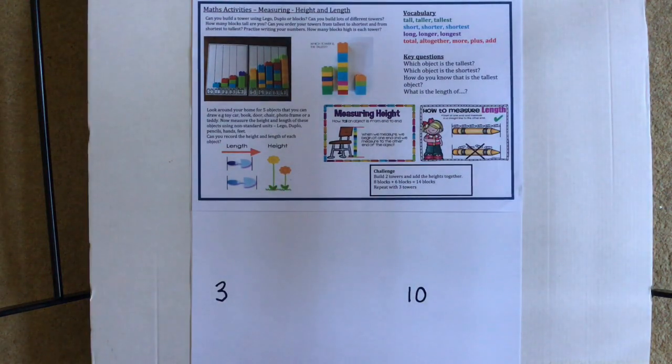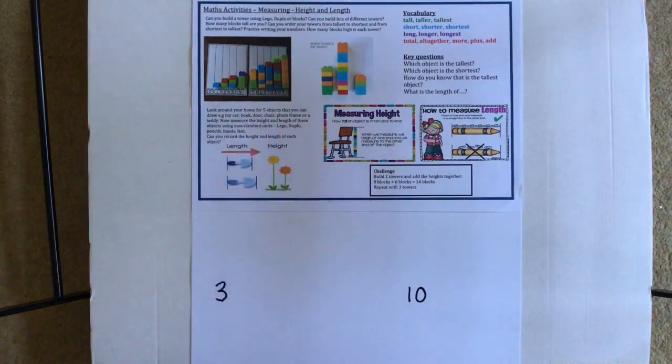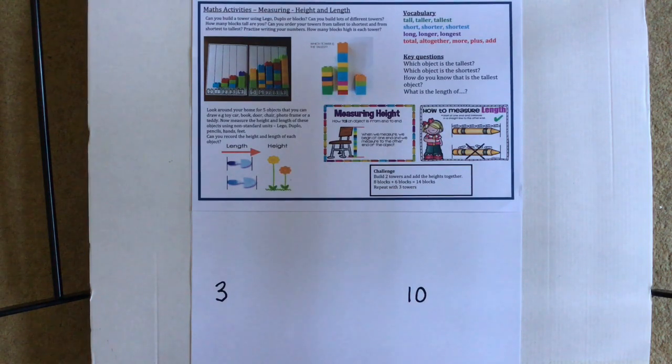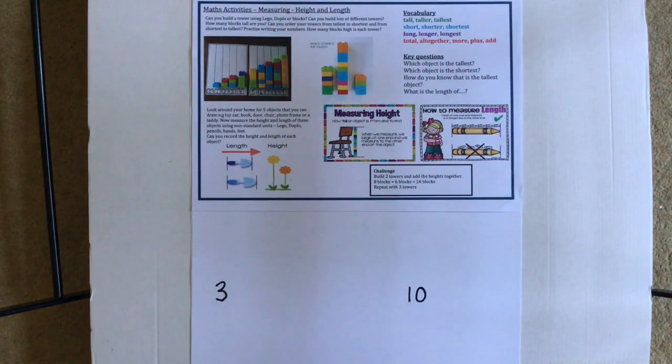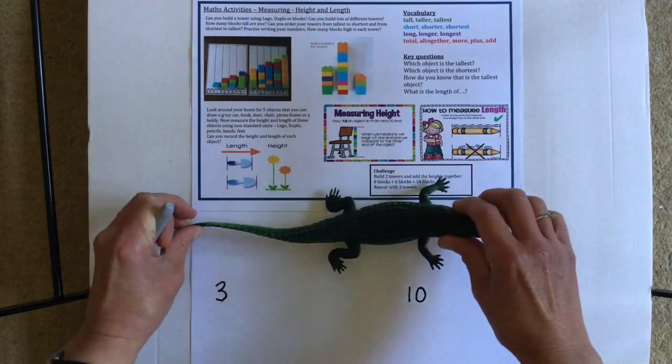When you've done that, maybe you can do the next activity, which is all about finding five different things in your house. It can be anything, a toy car, a cup, a chair. They can be big things, small things. You choose five different things and you can measure the height or you can measure the length of those things using anything you want, like blocks, or you could even try using some paper clips. I've got some pegs here. You could try using those, all sorts of things you could use to measure the heights and the lengths of things. Remember, it doesn't have to be how tall they are. It can be how long they are.